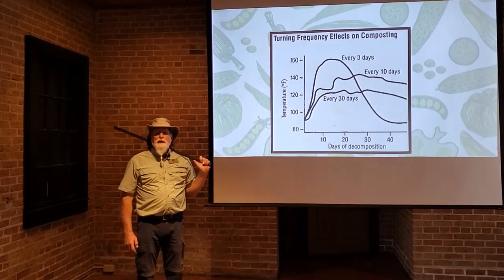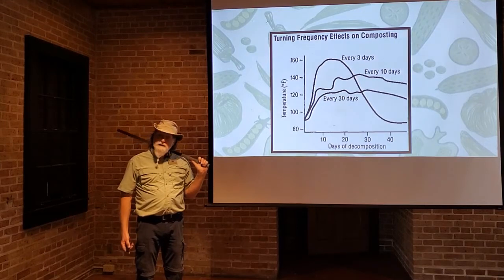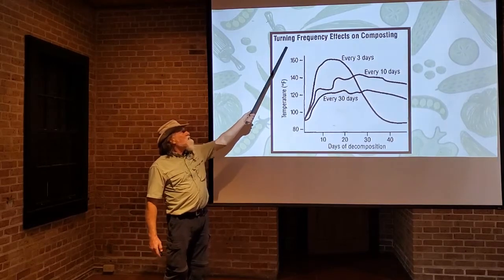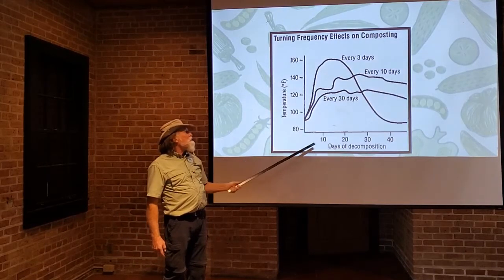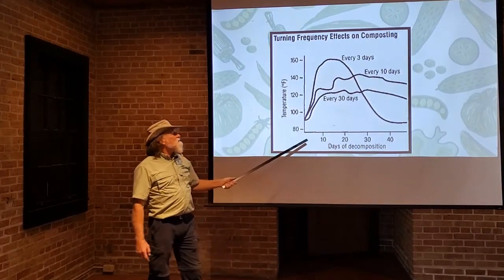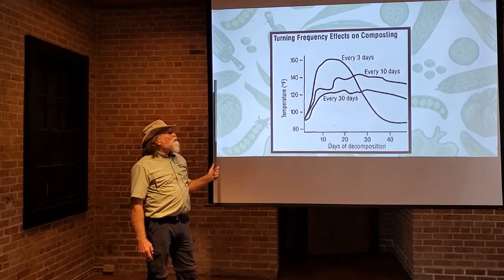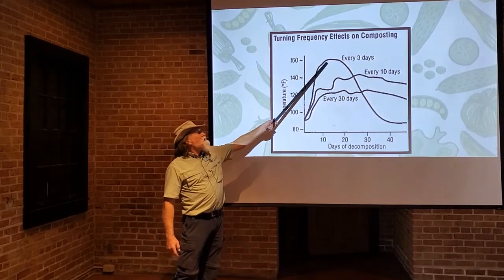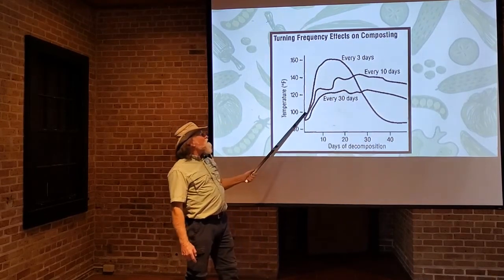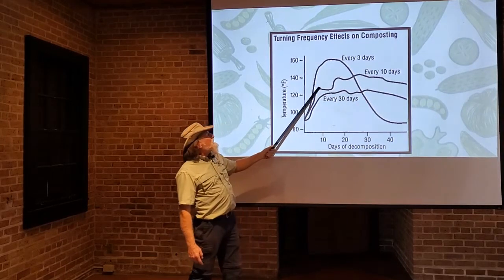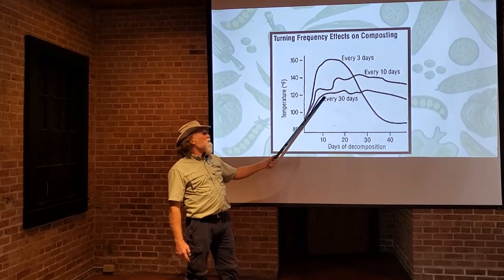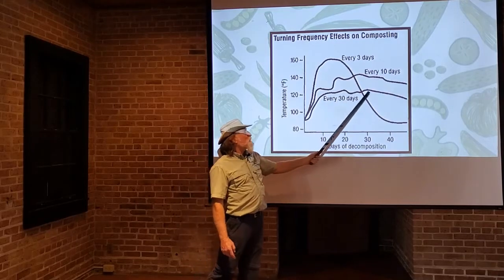Turning is a great way to aerate your piles or your container. This graphic shows the relationship between temperature and days of decomposition. If you're turning your pile every three days, it breaks down much faster than turning every 10 days. Turning every 30 days, it doesn't even come close to reaching the temperatures you want — that's more or less cold composting.